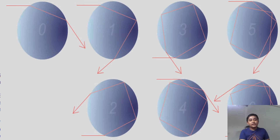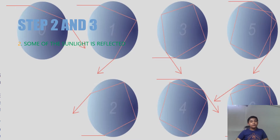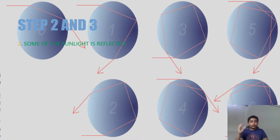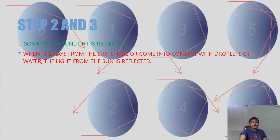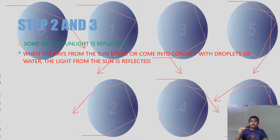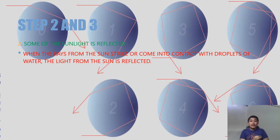The second step is that some of the light is reflected back towards the sun. When the rays from the sun come into contact with the water droplets, some of the light is reflected from the droplet and comes back towards the sun.